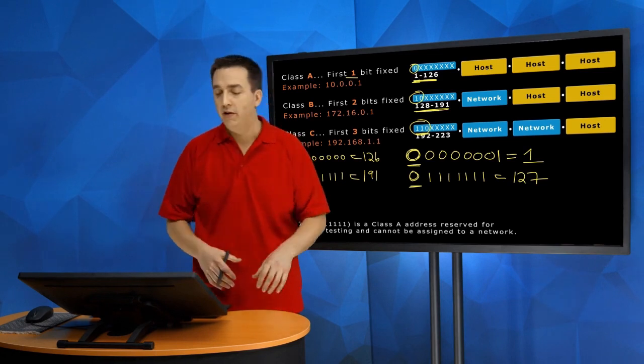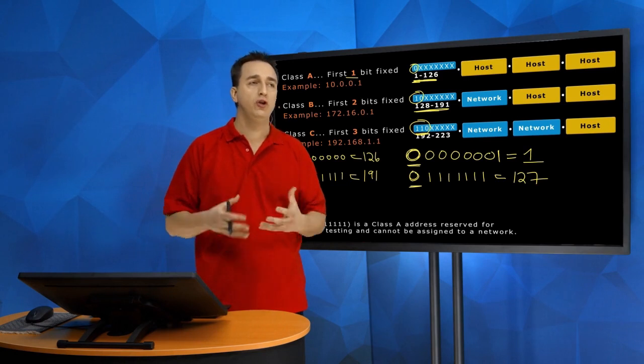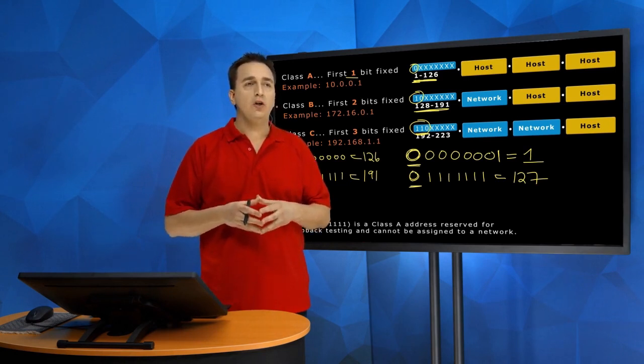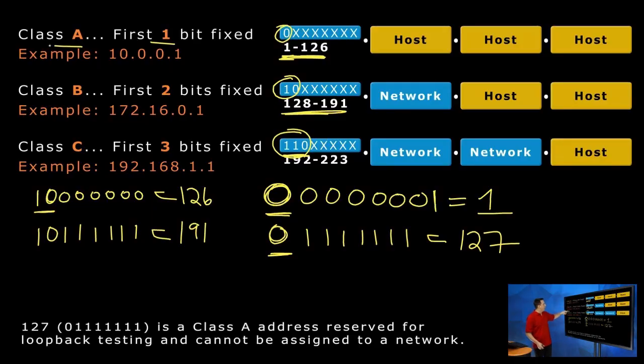which is 192. And then you'll have one, one, zero, one, one, one, one, one, which would equal 223. So you don't necessarily have to convert to binary to figure out whether it's a Class A, B, or C address, do you? No, you just have to know the very first decimal number.